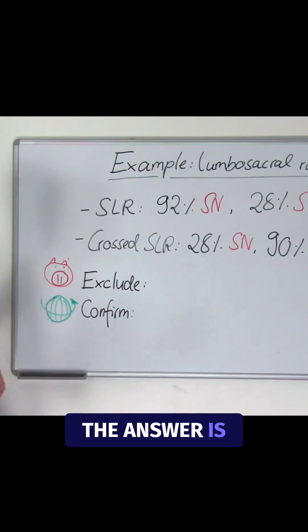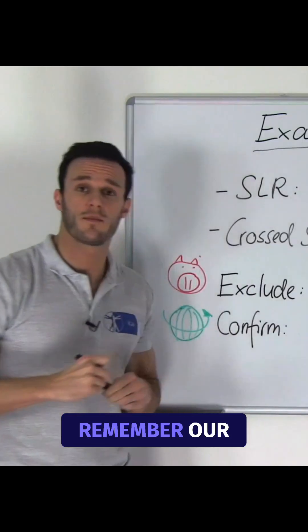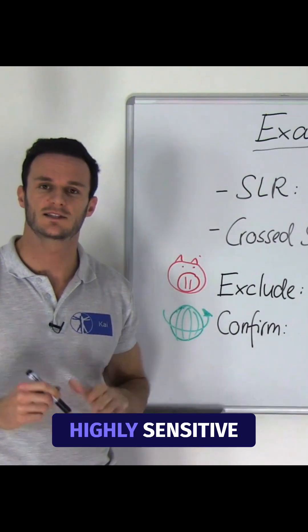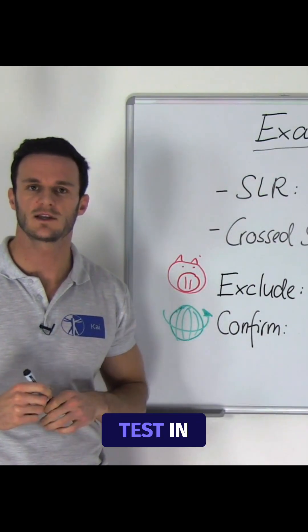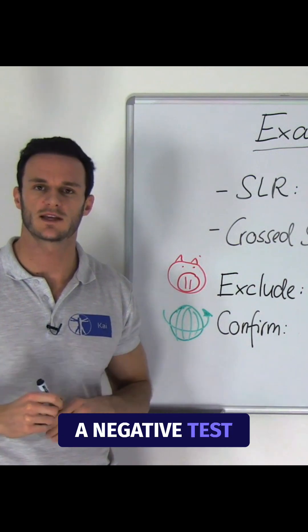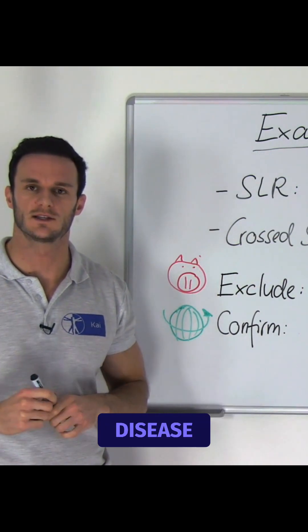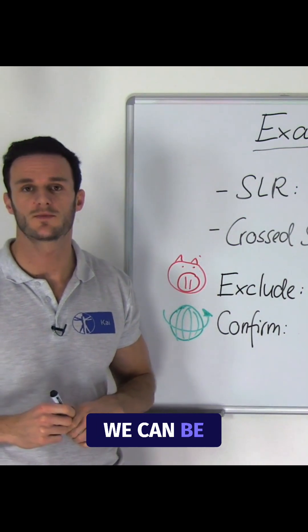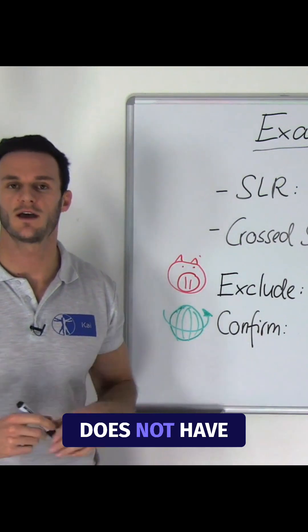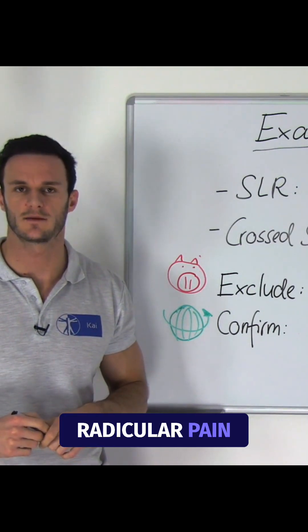The answer is the straight leg raise test. Remember our mnemonic SNOUT. We are performing a highly sensitive test in order to look for a negative test outcome to rule out a disease. If this test is negative, we can be pretty sure that our patient does not have lumbosacral radicular pain.